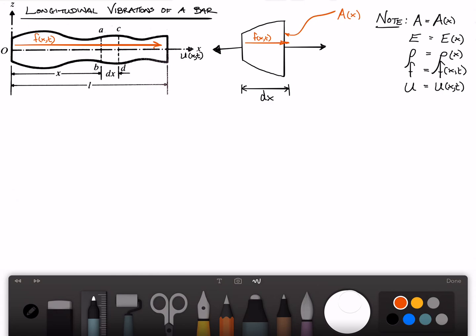u, in general, is a function of x and time, since we have a continuous system. And in general, there could be an external force, actually a force per unit length in this case, applied to the bar.